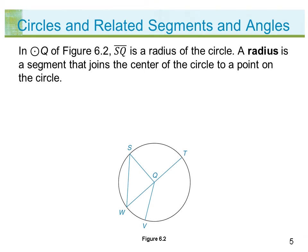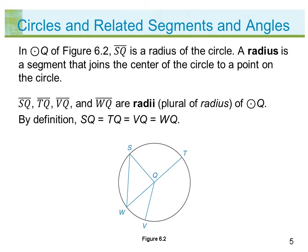In circle Q of figure 6.2, segment SQ is a radius of the circle. A radius is a segment that joins the center of the circle to a point on the circle. Segments SQ, TQ, VQ, and WQ are radii of circle Q.